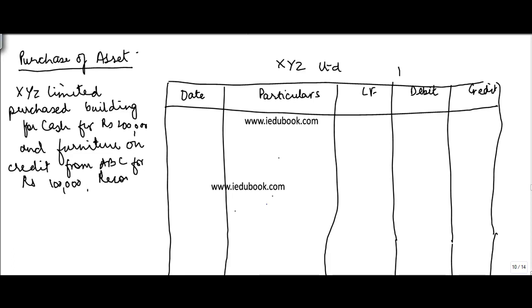Record in journal. The first thing which we do is we have to identify the accounts which are impacted. So I have purchased building for cash and purchased furniture on credit from ABC. So there are four accounts which are impacted. Now I can always club this as a single entry.